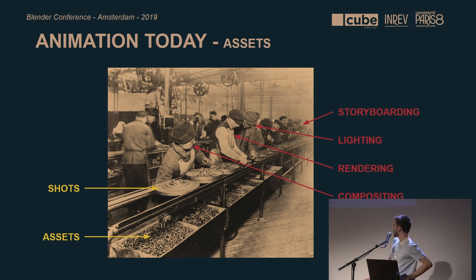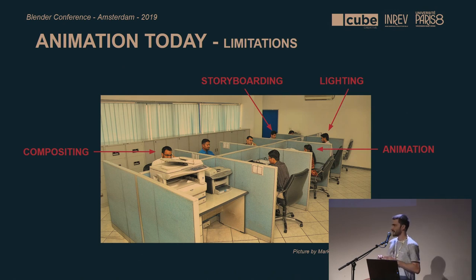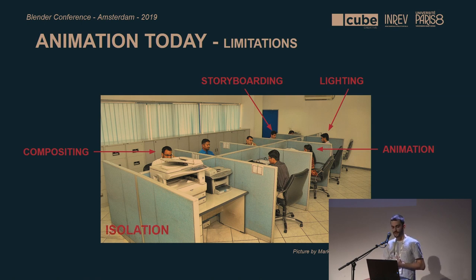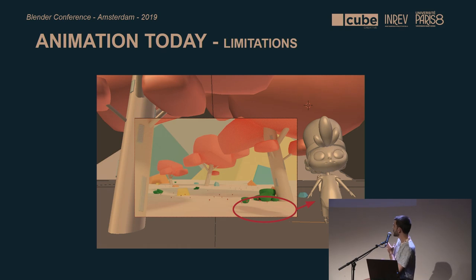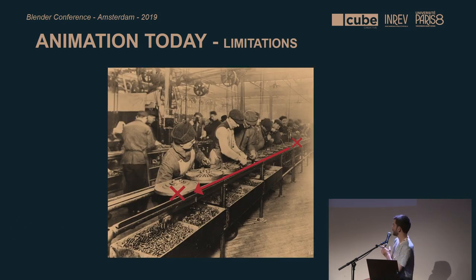But today's animation production looks more like this: artists working on individual tasks behind the screen, with no communication between artists from different stages. Those walls of isolation keep them from knowing what happened before and after their tasks. Those walls of silence could lead to mistakes. For example, since the animator doesn't have any lighting information, they couldn't prevent a character from casting unwanted shadows during the lighting stage. Those kinds of errors could impact the whole production chain and can be really tricky to roll back, costing a lot of money.